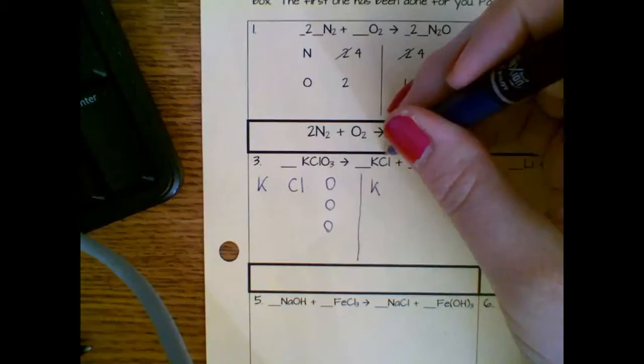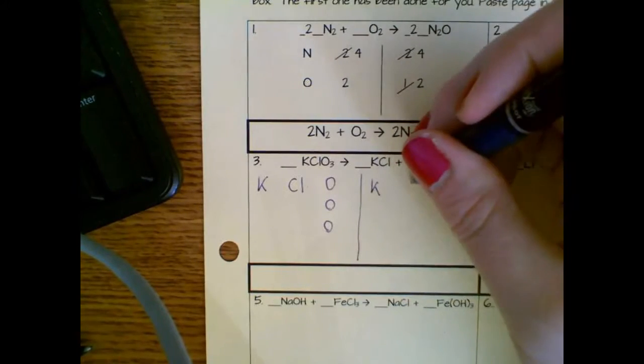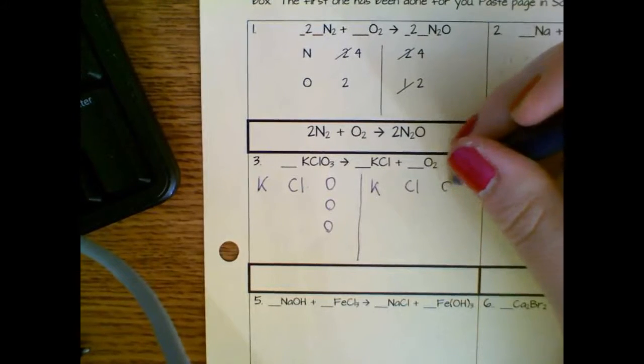Now I'm going to come over to the product side. I have one K, I have one CL, and now I have two O's.